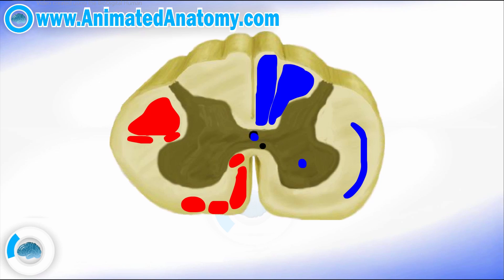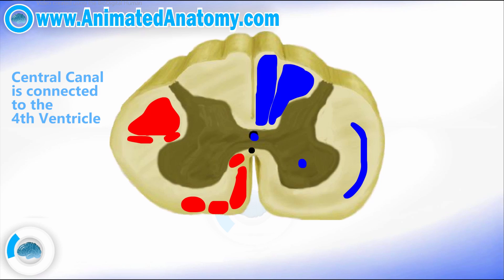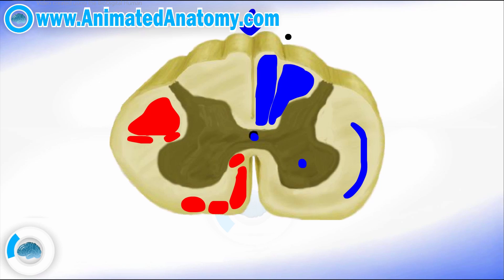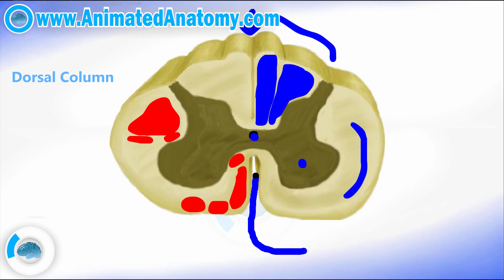This right here is the central canal of the spinal cord, which goes all the way cranially and enters the fourth ventricle. You can learn about that in my videos about the ventricular system of the brain. This right here is the dorsal median sulcus of the spinal cord. The gracile fasciculus and the cuneate fasciculus together create the dorsal column. On the front you have the ventral median fissure.